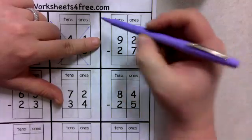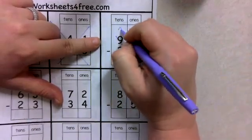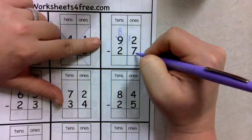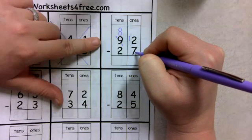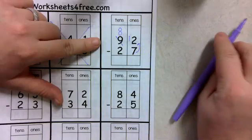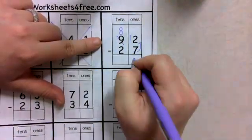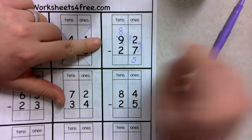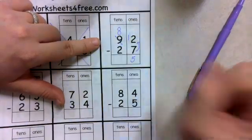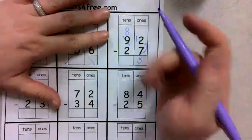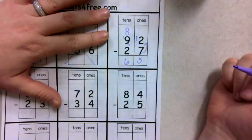2 minus 7. Can't do it. Borrow from the 9, make it an 8, 2 becomes a 12. 12 minus 7. If I'm struggling to do that in my head, I'm going to count from 7 to 12. So 7, 8, 9, 10, 11, 12, it was 5. 8 minus 2, 8, 7, 6, or if I'm struggling 2, 3, 4, 5, 6, 7, 8. Subtraction is just the difference between, so it is okay to count up.